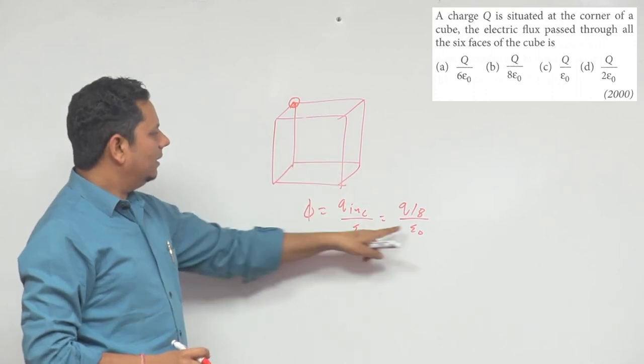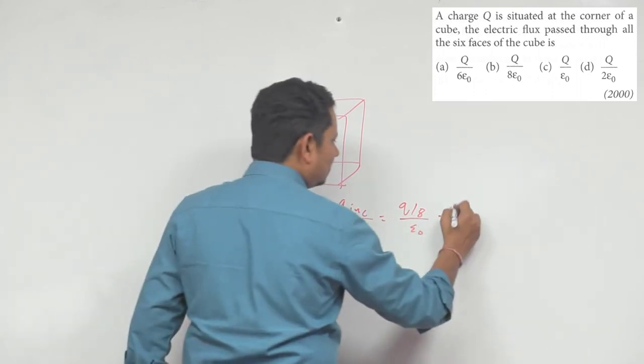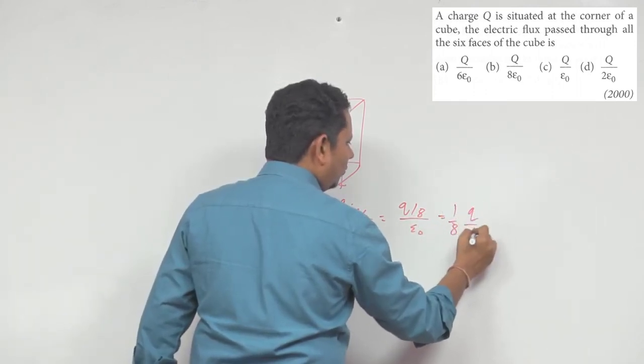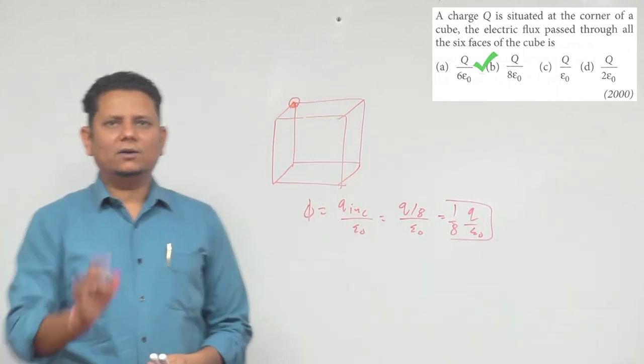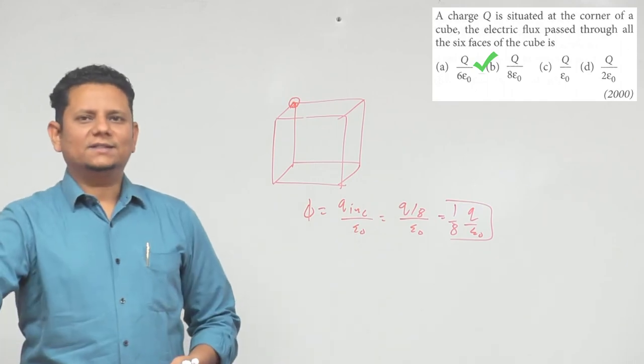So on this basis we can say this will be equal to 1 by 8 times Q by epsilon naught. This is the flux coming out of this cube. So based on this, option number B would be the right answer.